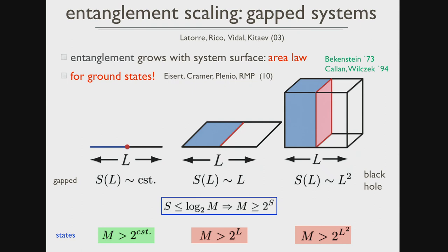If we take that formula which we just derived, we see that the matrix dimension we have to allow in our numerical algorithm will therefore scale exponentially in the entanglement. The matrix dimension in one dimension can be hoped to be independent of your system size. In two dimensions you're running into trouble — it grows exponentially with system size. And in three dimensions it looks really terribly bad. This already suggests the method will work best for one-dimensional quantum systems, perhaps in limiting cases in two dimensions, and you can more or less forget about it in three dimensions.